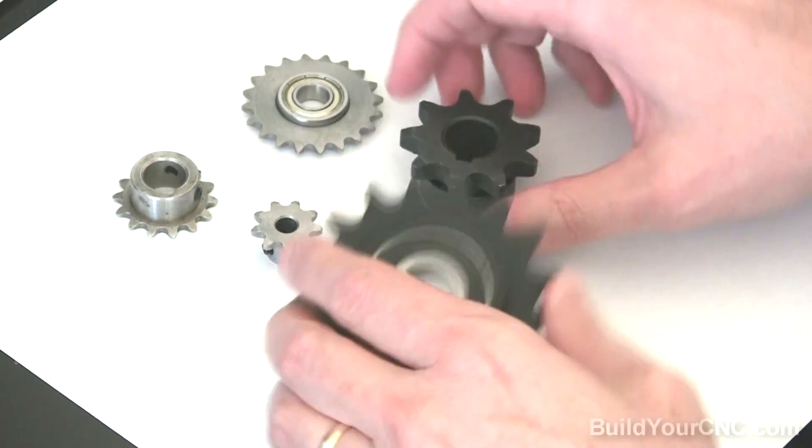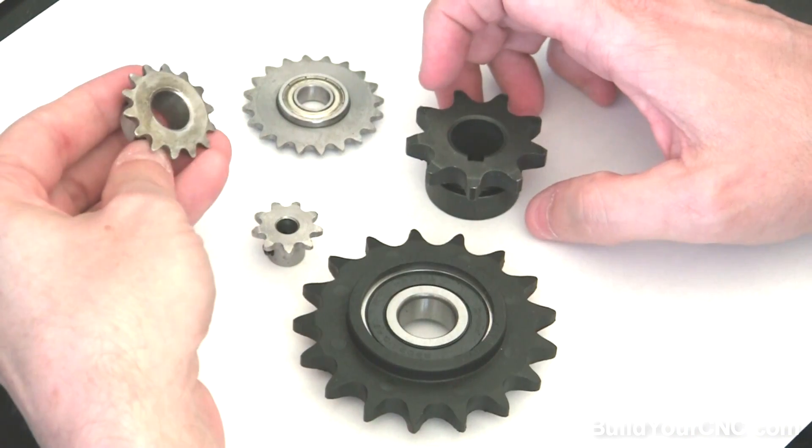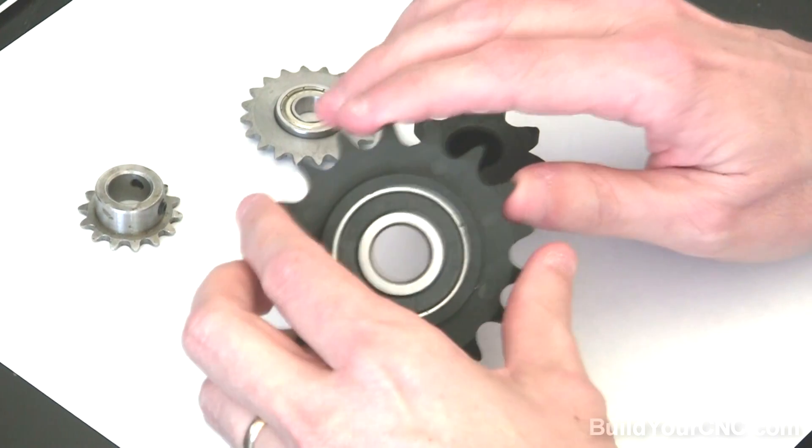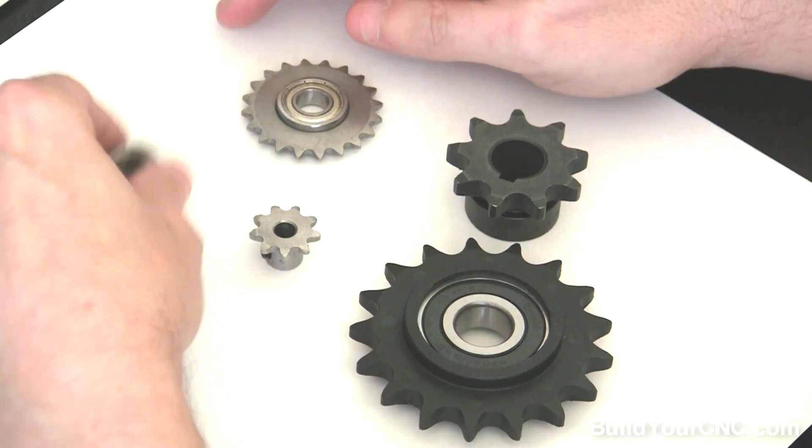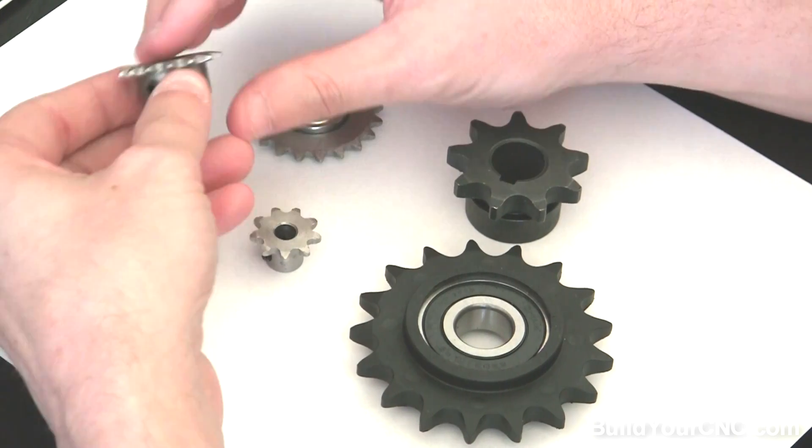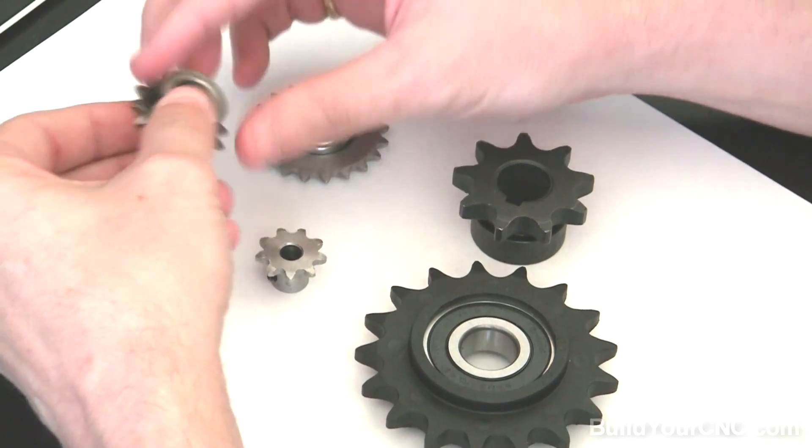There are also different sizes of sprockets. This is a number 25, which has a quarter inch pitch. And this is a number 40, which has a half inch pitch. The smaller sprockets, or the quarter inch pitch sprockets, are used in applications that have low torque.